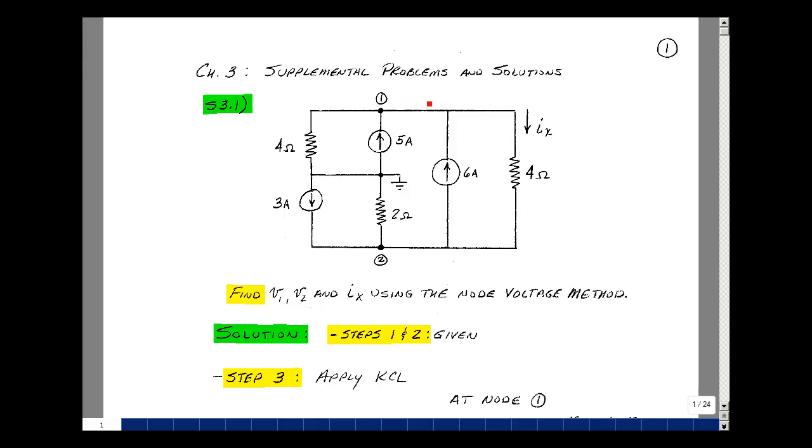Given the circuit, could you find node voltage 1, node voltage 2, and the current I sub x using what's called the node voltage method?